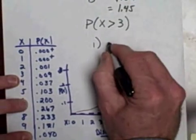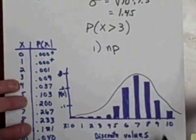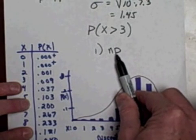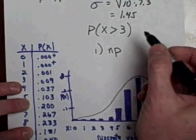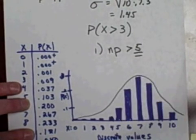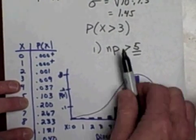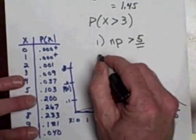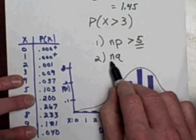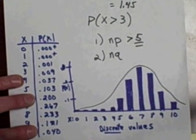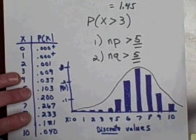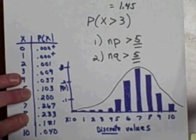Number one, if you multiply the size of our sample n times the probability p, that has to be bigger than five. What we're saying is we have to have at least five successes - the probability of success. Also what has to be true is if you multiply our sample size times the probability of failure, that number also has to be bigger than five. We also have to have at least five failures.